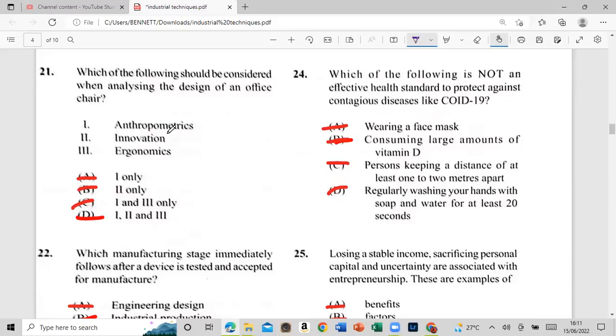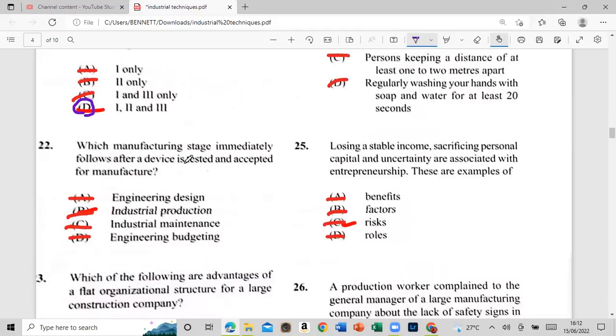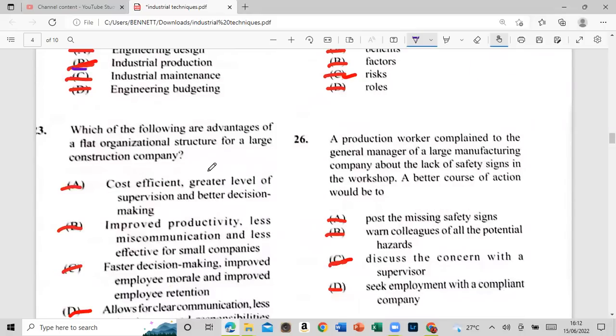So six, six, six, six. Which of the following should be considered when analyzing design of an office chair? And torture from and intro metrics, innovation, or ergonomics? And the 21 is one, two, and two. So that's all three. So the video I'll go quick, putting out with that time on which one of our children see. Immediately follows after a device is tested and accepted to for a manufacturer: engineering design, industrial production, and don't show industrial maintenance, or engineering budget? And that's industrial production. And that's all three.